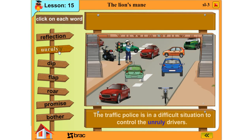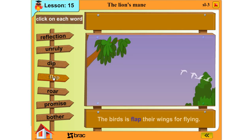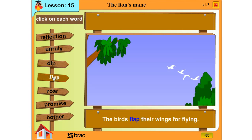Unruly: The traffic police is in a difficult situation to control the unruly drivers. Dip: Dip a teabag into water to make a cup of tea. Flap: The birds flap their wings for flying.